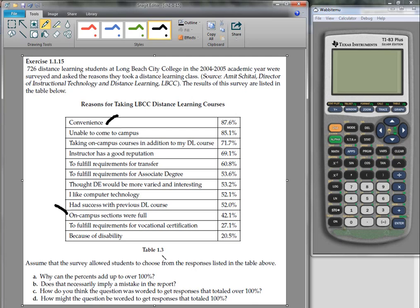However, the problem with that is that you can get tons and tons of reasons and you may only have one person that has a reason for taking a course and then it gets added to the list.